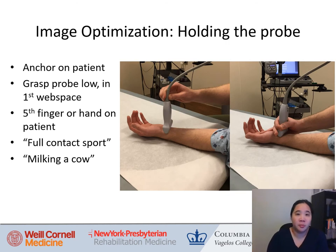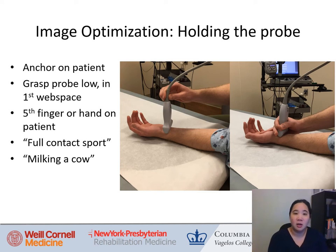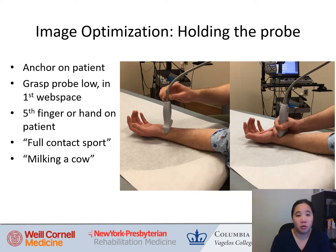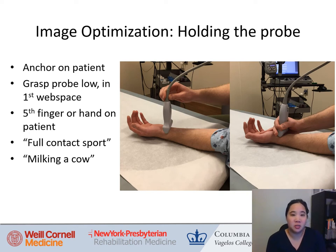Now I'll go through terminology for getting the optimal image. First, make sure you're holding the probe correctly. The best way — as shown on the right — is to anchor your hand on the patient, grasp the probe low and hold it in your first web space, with your fifth finger on the patient. This is called a full contact sport, also commonly described as 'milking a cap.'